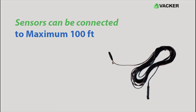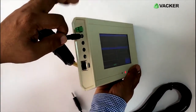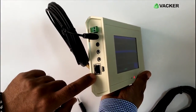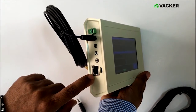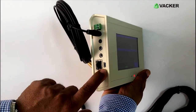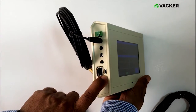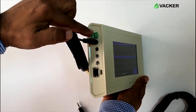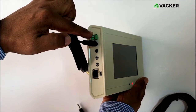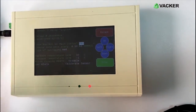We can connect sensors up to a maximum of 100 feet. The first sensor is now connected. You can see there are four ports — this port is for connecting to a network, these are for four sensors, and this is for downloading the data by USB as well as for charging. This contact is for generating phone call alerts. You can see that sensor 1 is automatically detected.